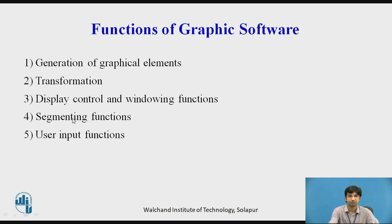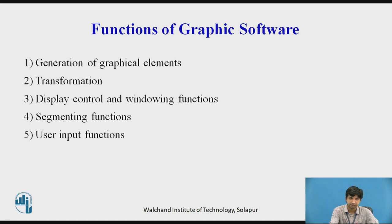The fourth function is segmenting functions. With the help of transformation tools, we can edit or change the geometrical entity. This function provides options to replace, delete, and modify portions of an image, and also provides provision to store the image in computer memory. CRT tubes are not suited for segmenting functions; raster scan technique is used instead. The fifth function is user input functions, which provide user-friendly software to function as a geometrical entity.